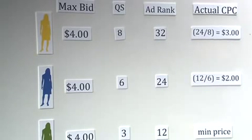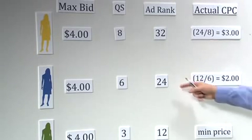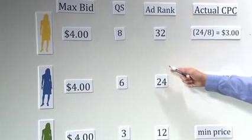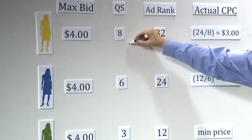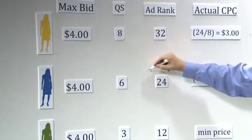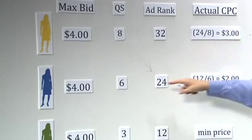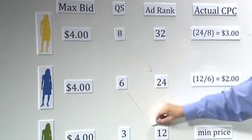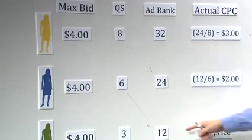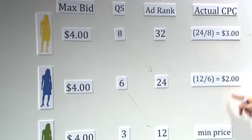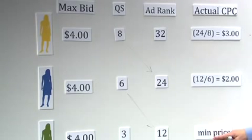So what determines the price? Well, the price is going to be the ad rank of the advertiser below divided by the quality score of the given advertiser. So in this particular case, it's going to be 24 divided by 8 or 3. In this case, it's going to be 12 divided by 6 or 2. And finally, for the last advertiser, in this example, there's no advertiser below the last advertiser. So the price this person ends up paying per click is just the minimum price that's determined for that auction.